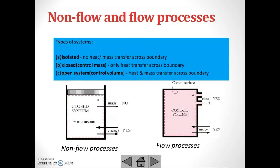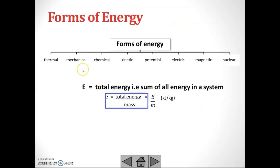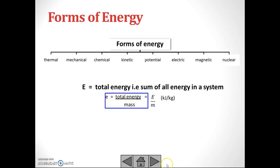We have a few types of forms of energy, such as thermal, mechanical, chemical, kinetic, potential, electric, magnetic, and nuclear energy. The symbol capital E represents total energy, which is the sum of all energy in the system. Total energy divided by mass gives us small e, with units of kilojoules per kilogram.